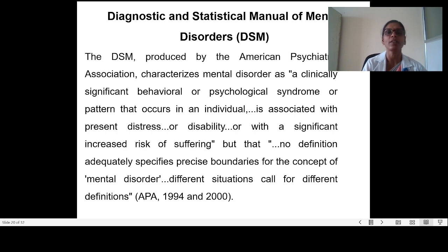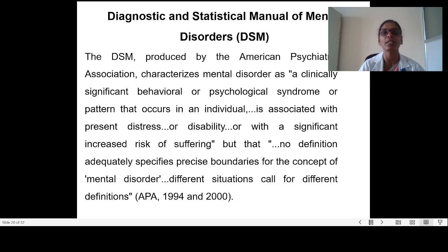Moving to the second classification: the Diagnostic and Statistical Manual of Mental Disorders, known as DSM, produced by the American Psychiatric Association. It characterizes a mental disorder as a clinically significant behavioral or psychological syndrome or pattern that occurs in an individual, associated with present distress or disability or with a significant increased risk of suffering. As per the American Psychiatric Association in 1994 and 2000, different situations may call for different definitions.